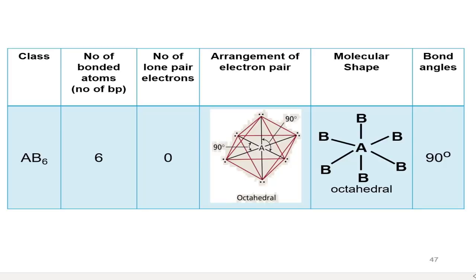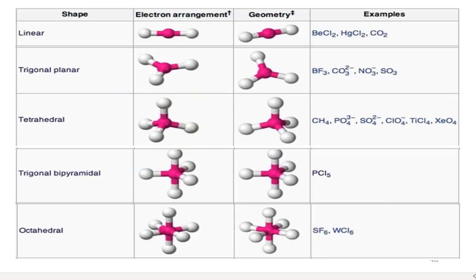Here are examples of molecules for each shape. For linear: BeCl2, HgCl2, and CO2. For trigonal planar: BF3, CO3²⁻, NO3⁻, and SO3. For tetrahedral: CH4, PO4³⁻, SO4²⁻, ClO4⁻, TiCl4, and XeO4. For trigonal bipyramidal: PCl5. For octahedral: SF6 and WCl6.